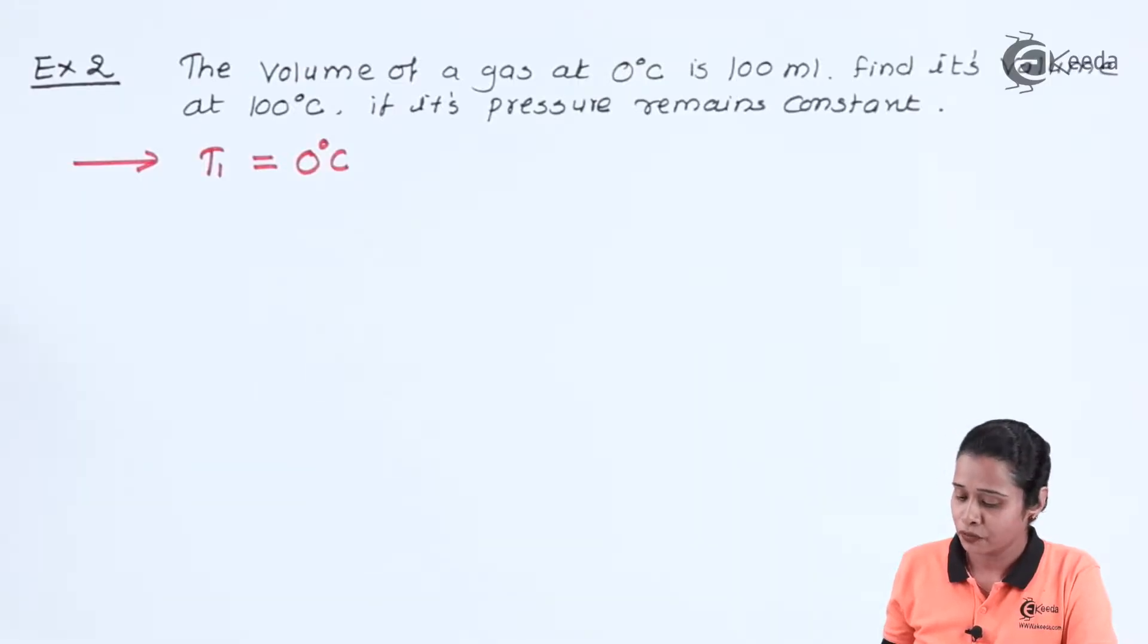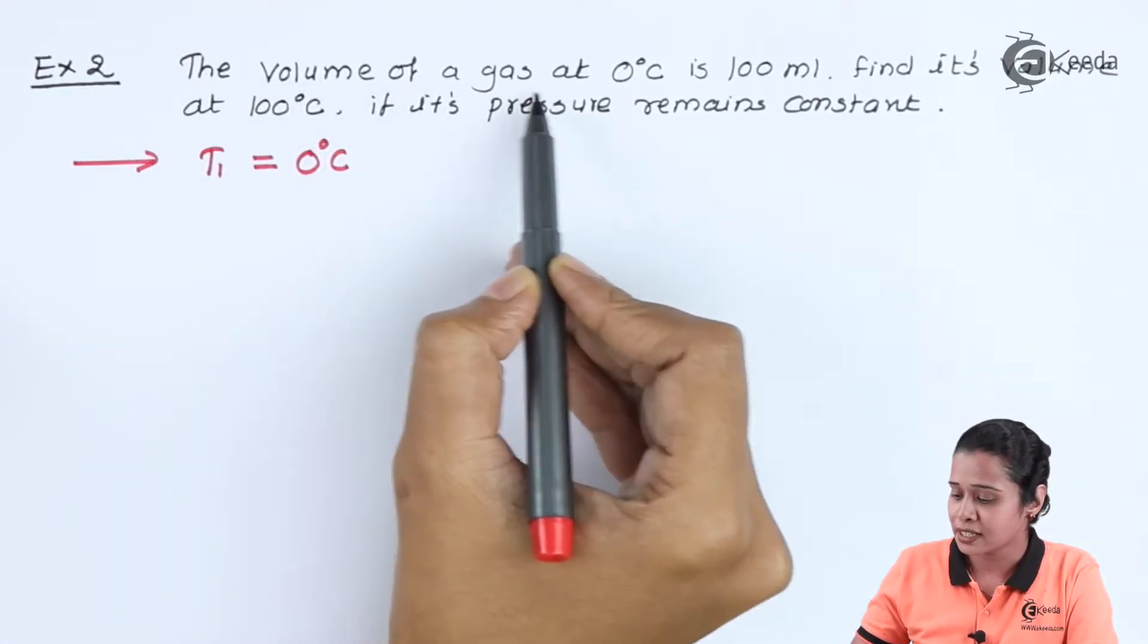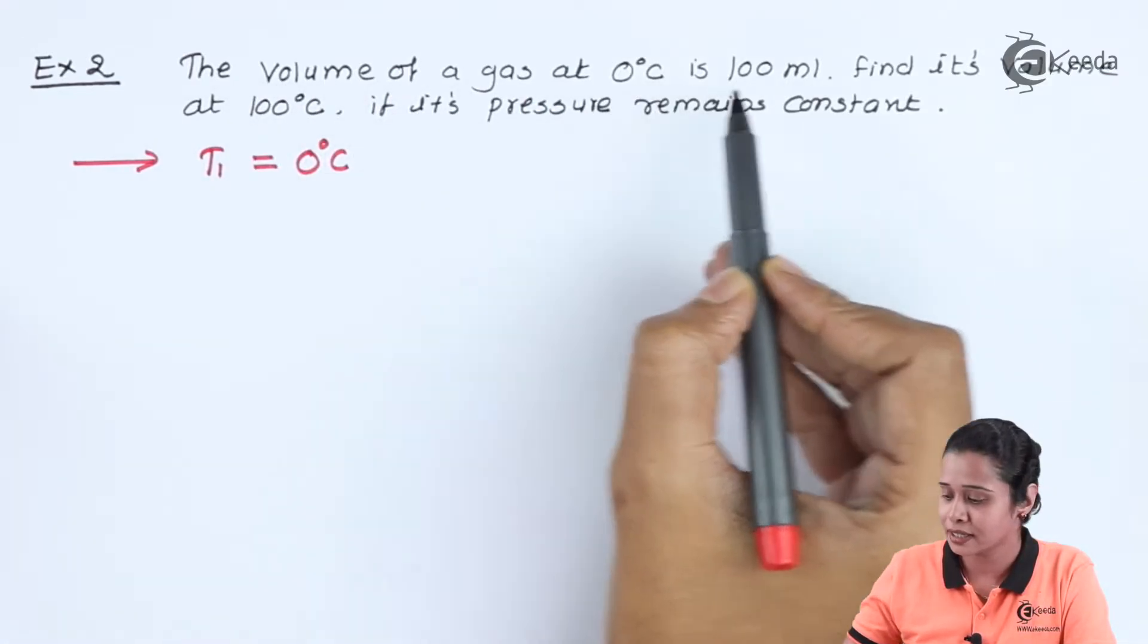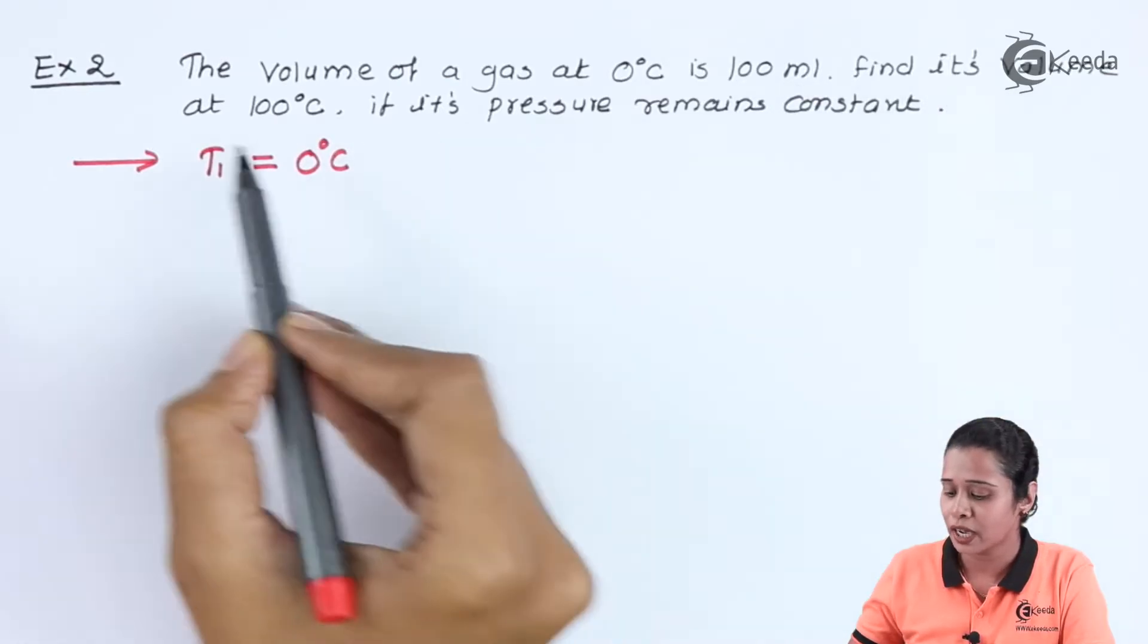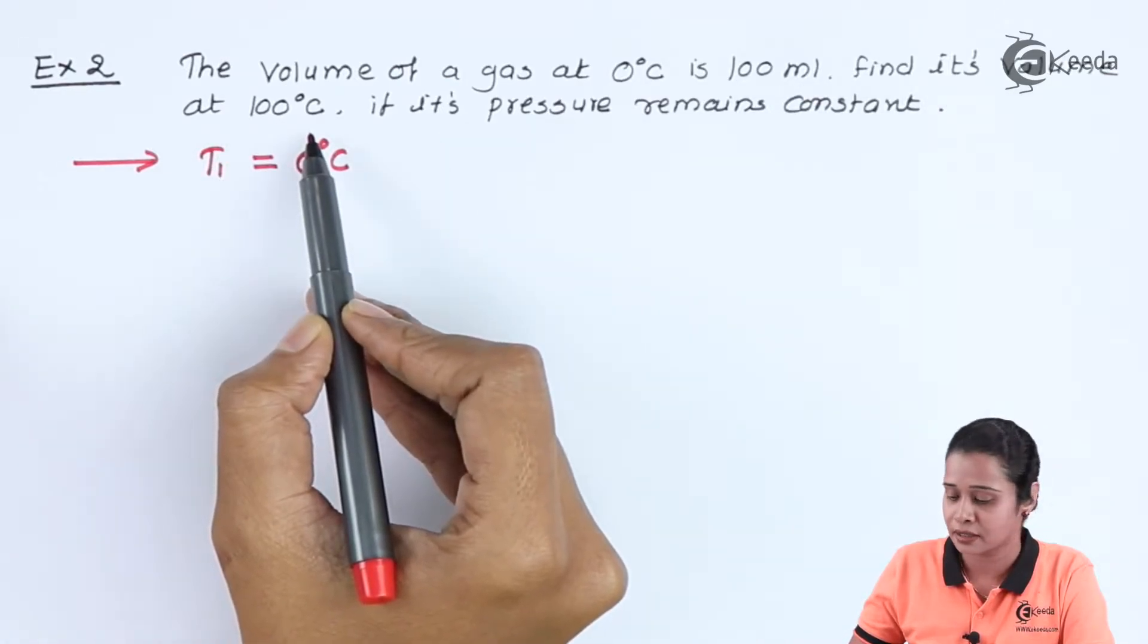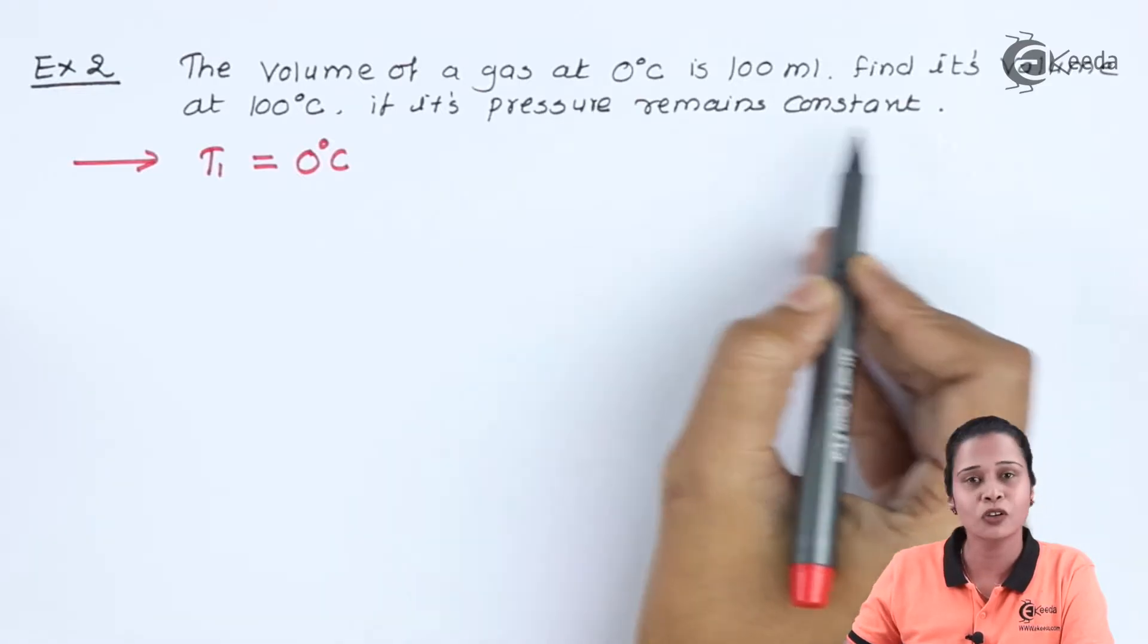In numerical number 2, we have the volume of gas at 0 degree Celsius is 100 ml. Find its volume at 100 degree Celsius if its pressure remain constant.